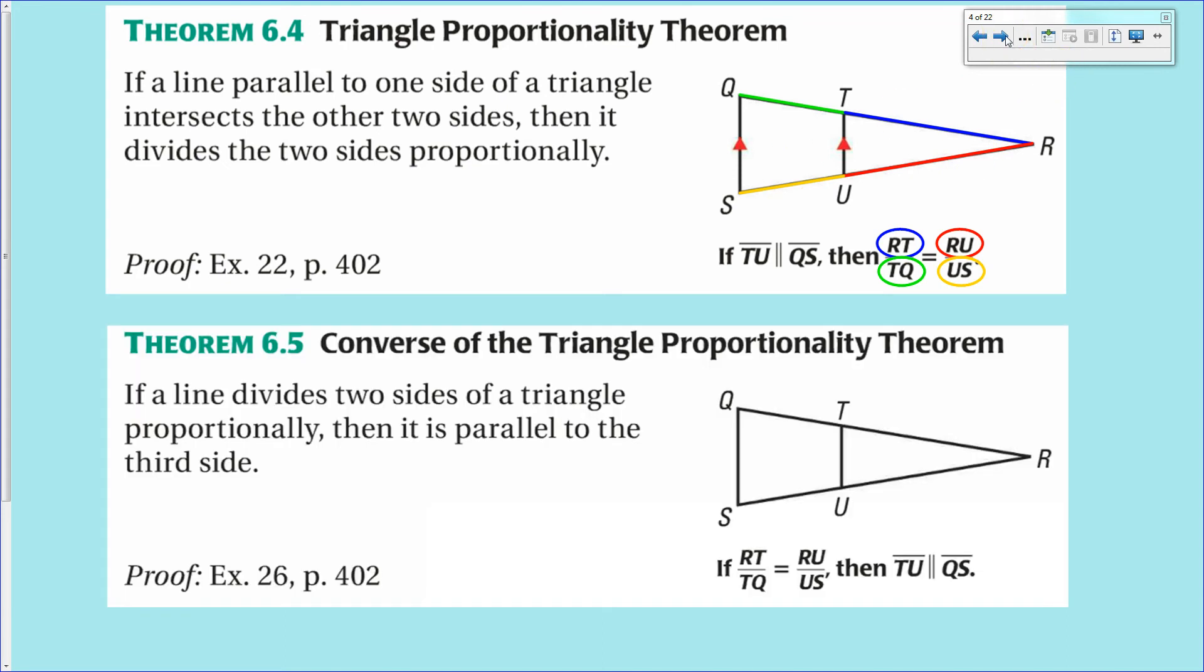The second theorem I have for you today is the converse of 6.4, the triangle proportionality theorem. The converse of the triangle proportionality theorem says that if you take these ratios of these segments, RT to TQ and RU to US, and you find them to be the same, that is that they are proportional, then you can prove, you can conclude that TU is parallel to QS, or in other words that those two lines are parallel. This is a useful thing because it proves that two lines are parallel, and we don't have any other theorems today that do that.